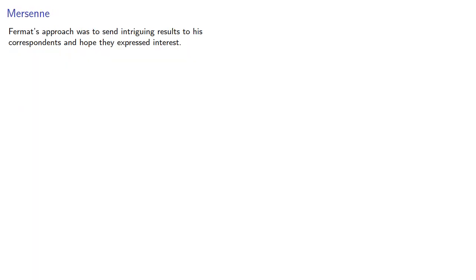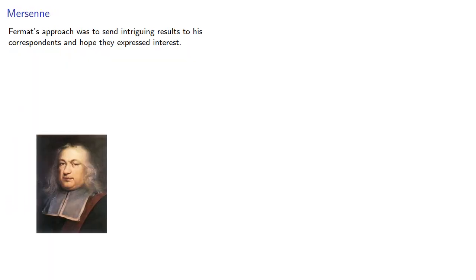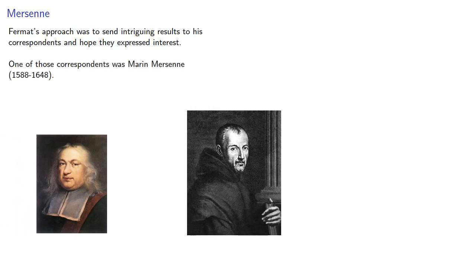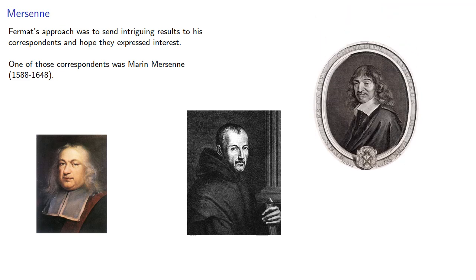Fermat's approach was to send intriguing results to his correspondents and hope they expressed interest. One of those correspondents was Marin Mersenne, a French Minim friar. Through Mersenne, Fermat was put in contact with other French mathematicians including Descartes and Frédéric de Bessy. Unfortunately, Mersenne was not above stirring up trouble.